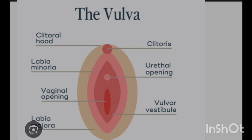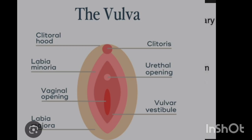Starting with the external female genitalia, or external female reproductive tract, this consists of labia majora, labia minora, clitoris, vestibules and vestibular glands, vaginal orifice, and hymen. Starting with the labia majora — 'labia' means lips, 'majora' means big — it is composed of skin, connective tissue, and vestibular glands located on the outside of the vagina. It is the area where the pubic hair grows.